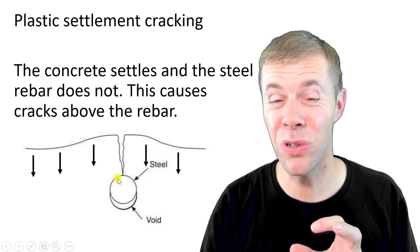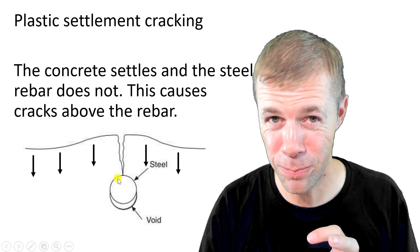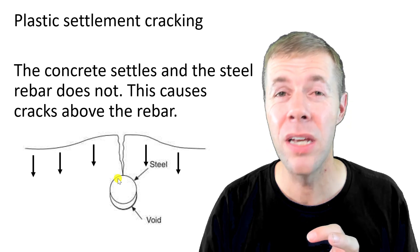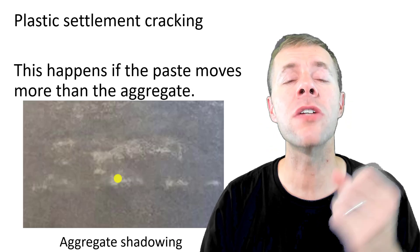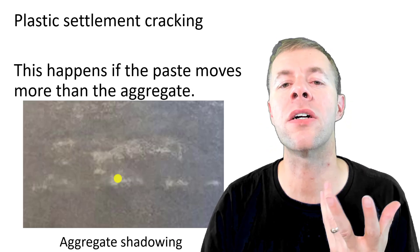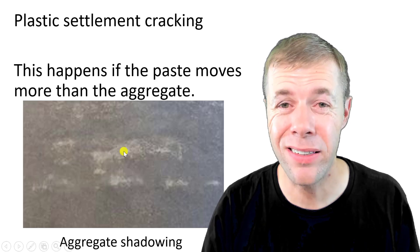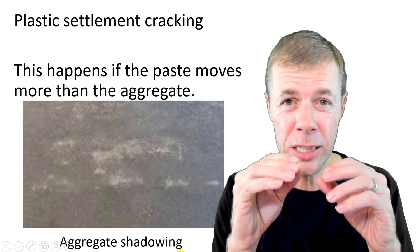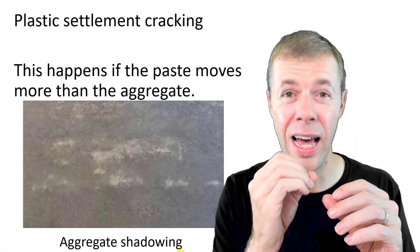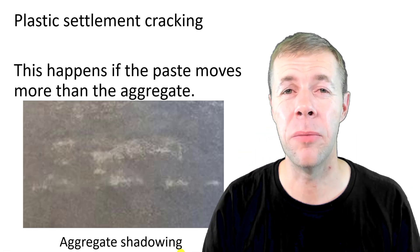But this can also happen over aggregates. This is called aggregate shadowing. See these little white spots? These are cracks actually, where again, the paste is moving down and the aggregates are holding steady and it causes cracking above it.